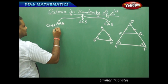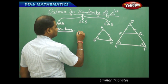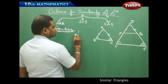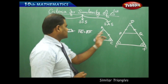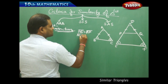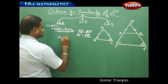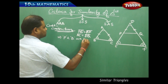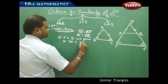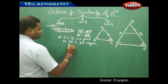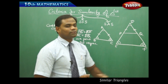For the construction: mark a point P on DE such that AB equals DP, and mark a point Q on DF such that AC equals DQ. So P and Q are points on DE and DF respectively. Then join P and Q, giving us two triangles ABC and DPQ correspondingly.